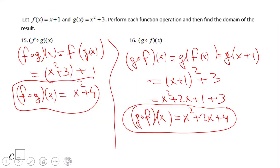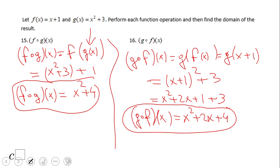About the domain of a composition: you need to be careful. It is very important to always look at the input of the first function. For example, look at g of x — what is the input for that function? All real numbers. Then transfer that to your f function. If there is a restriction on one of the functions — if the function is a radical or rational function — you need to be careful.